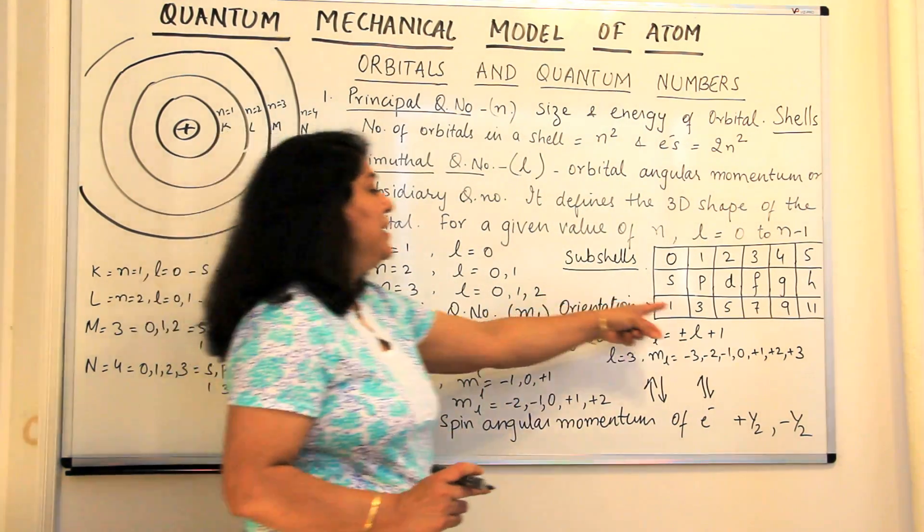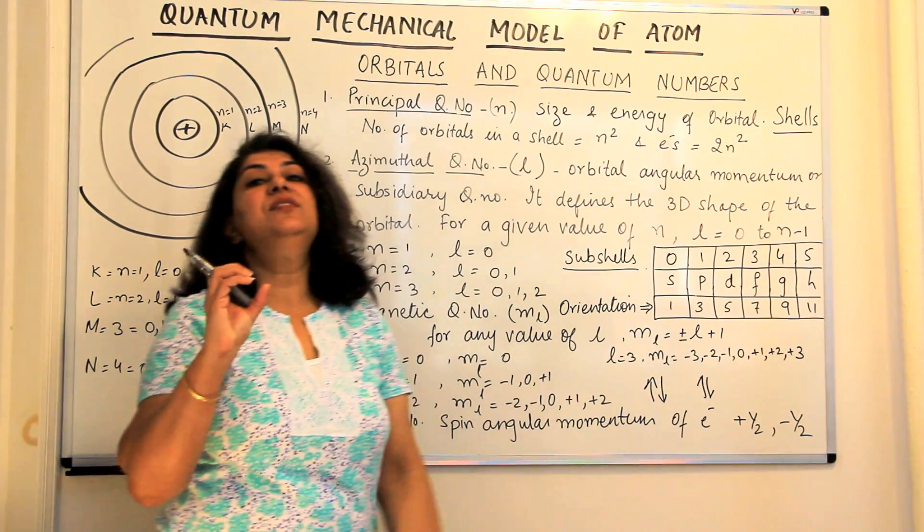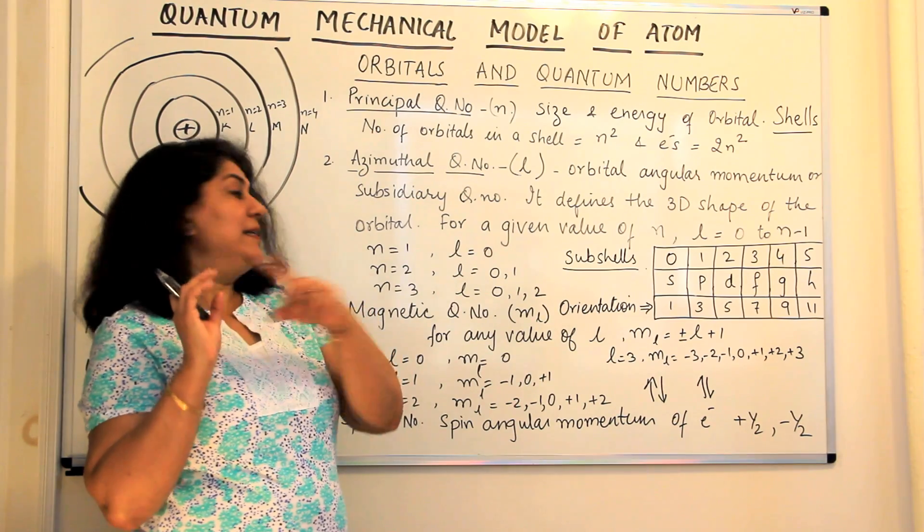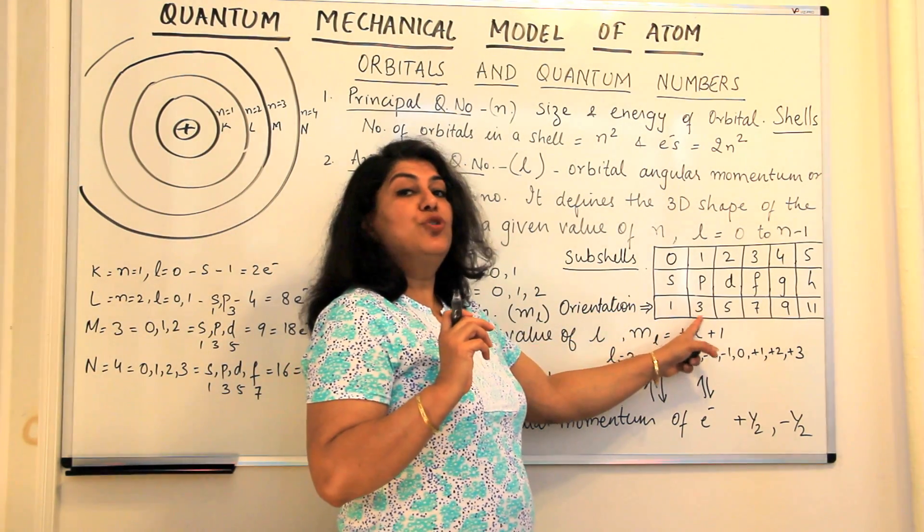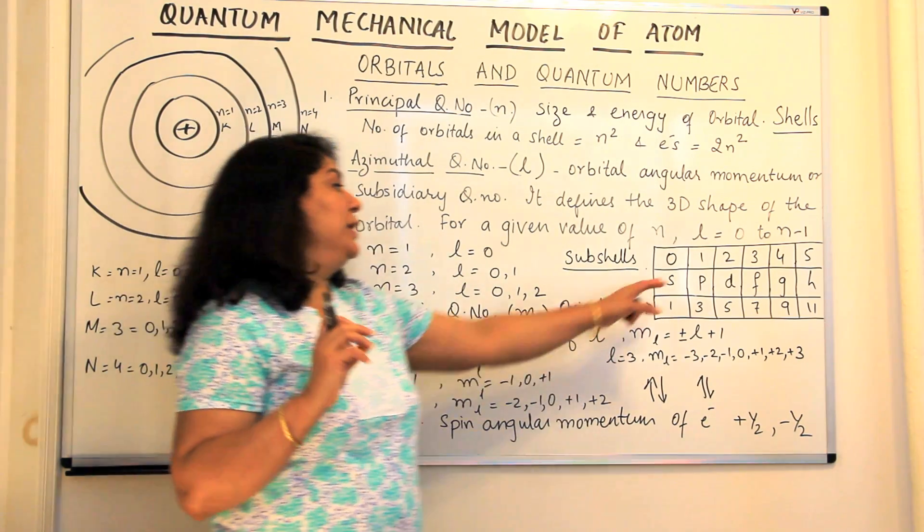And how do you calculate these rooms? From this formula, that whatever is the number of l plus minus that value and 0. So from minus integer to the positive integer, the same number and the value of 0 in between.